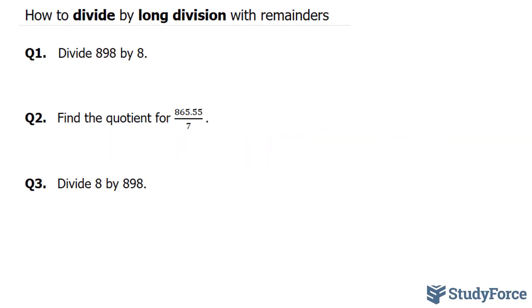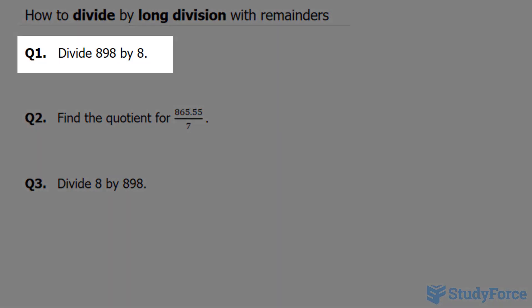In this lesson, I'll show you three examples on how to divide by long division with remainders. Question 1 reads: divide 898 by 8.